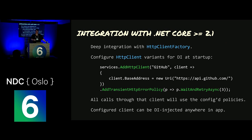Integration with .NET Core 2.1 or higher is great. With the HTTP client factory you can configure these policies and use a factory to get particular policies — for example, one that's pre-configured for the GitHub API. It's actually a very nice way to use it.